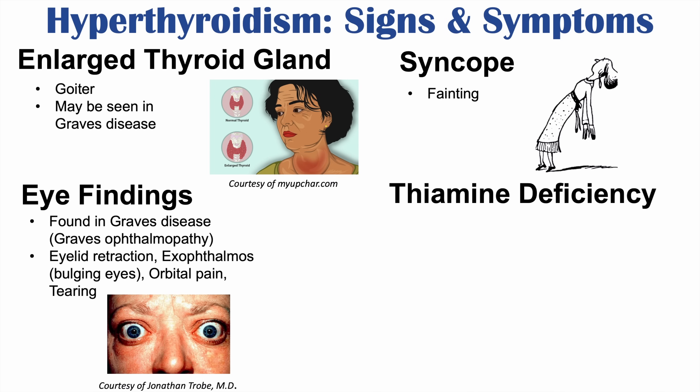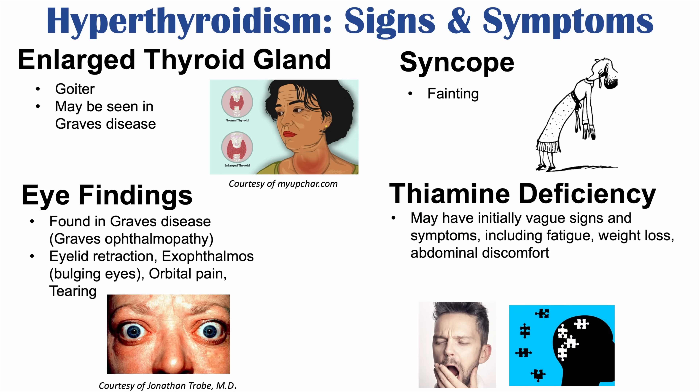Hyperthyroidism can also cause vitamin deficiencies, particularly thiamine (vitamin B1) deficiency, as vitamins can be consumed quickly with increased metabolism. Initial signs include vague symptoms like fatigue, weight loss, and abdominal discomfort. If prolonged, this deficiency can lead to Beriberi or Wernicke-Korsakoff syndrome, though Beriberi is the more likely manifestation, while Wernicke-Korsakoff is more often associated with alcohol abuse.